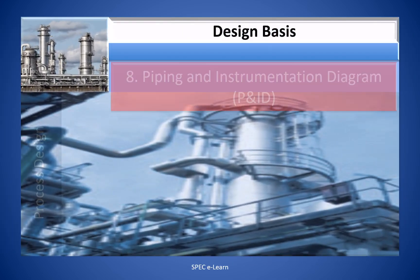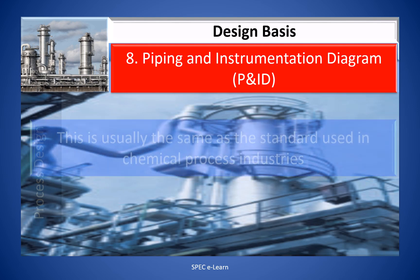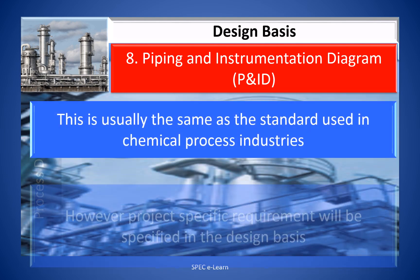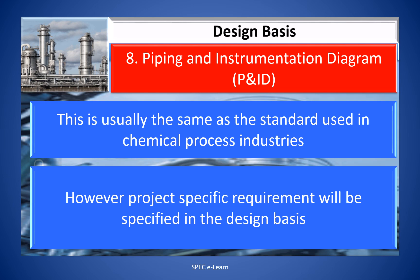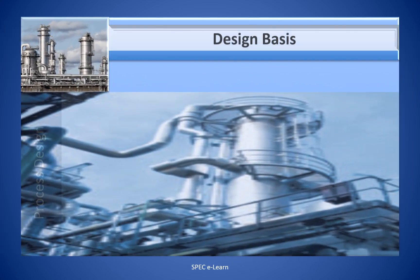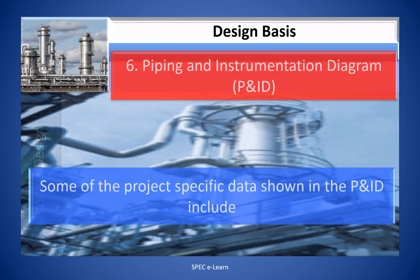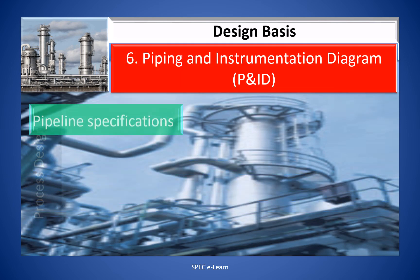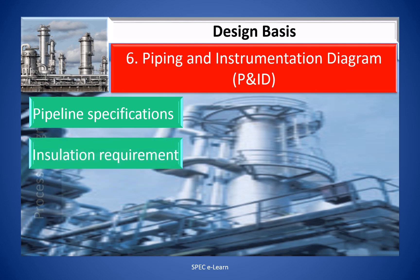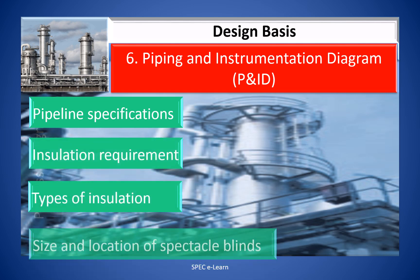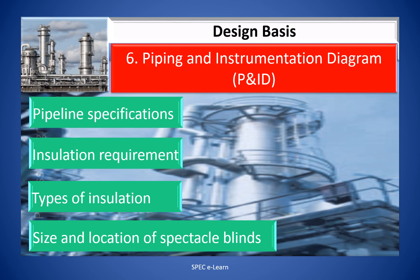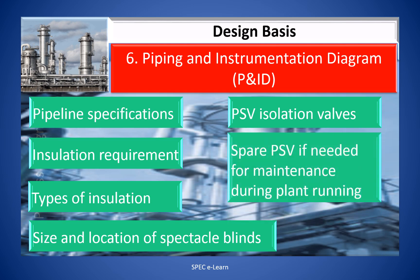Eight: Piping and Instrumentation Diagram (P&ID). This is usually the same as the standard used in the chemical process industries. However, project-specific requirements will be specified in the design basis. Some of the project-specific data shown in the P&ID include pipeline specifications, installation requirements, types of insulation, size and location of spectacle blinds, PSV accuracy and valves, and spare PSVs if needed for maintenance during plant running.